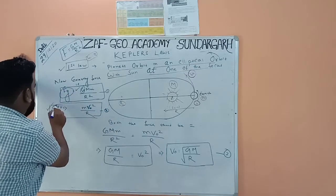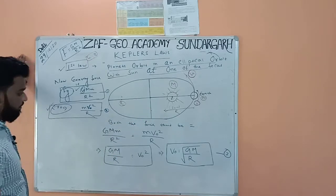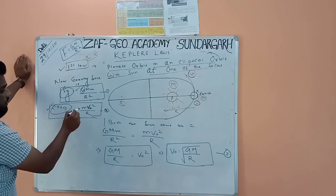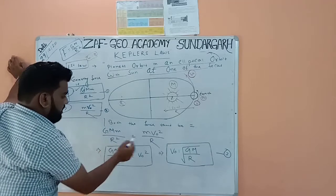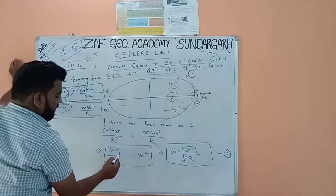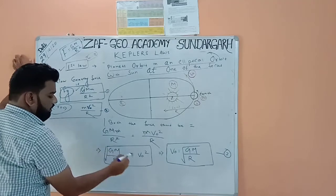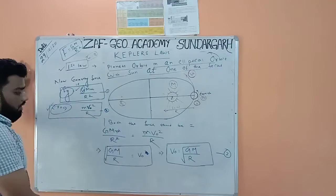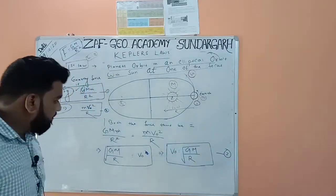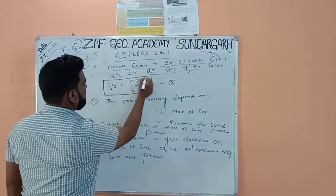To balance the system, the gravitational force and the centripetal force must be equal so the system is in equilibrium. Setting them equal: G·M·m / r² = m·V0² / r. The small m cancels on both sides and one factor of r cancels, leaving G·M / r = V0².